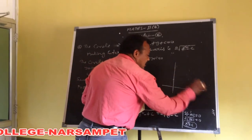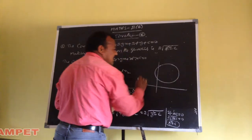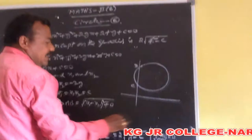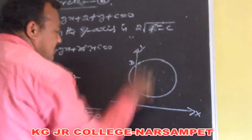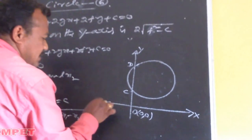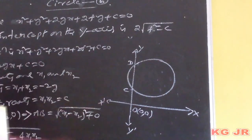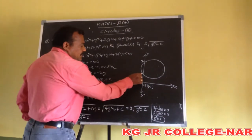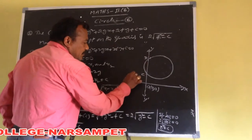Here is the x-axis, y-axis, and origin. The circle intersects the y-axis at two points — we consider the two points c and d. The coordinates of c are (0, y1) and the coordinates of d are (0, y2). The distance between c and d is the intercept the circle makes on the y-axis.